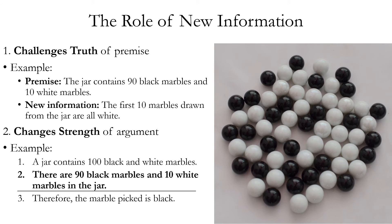A second role of new information is challenging not the truth of an individual premise, but the strength of the overall argument. Example: a jar contains 100 black and white marbles, therefore the marble picked is black. With only that one premise, this is a logically weak argument because we have no information about the proportion of black and white marbles. However, if we're given a new premise — there are 90 black marbles and 10 white marbles in the jar — this changes the strength of the argument, functioning as an additional premise that increases the probability of the conclusion to 90%, thereby strengthening the argument logically.